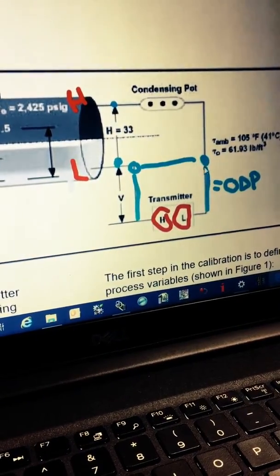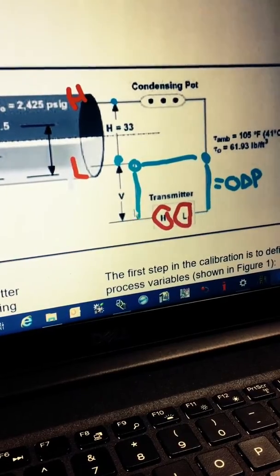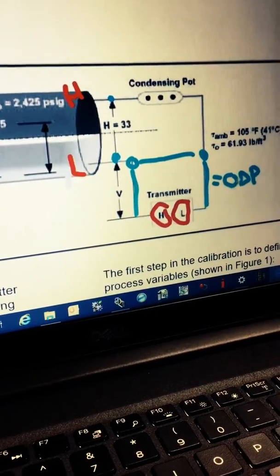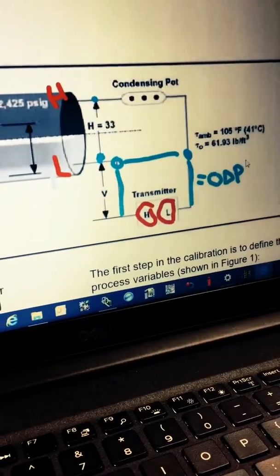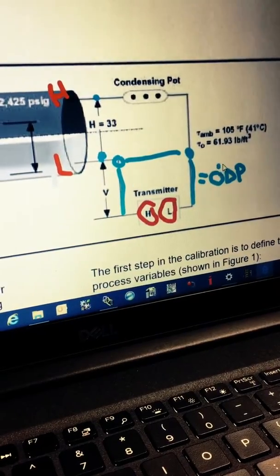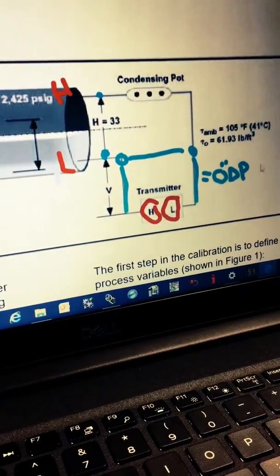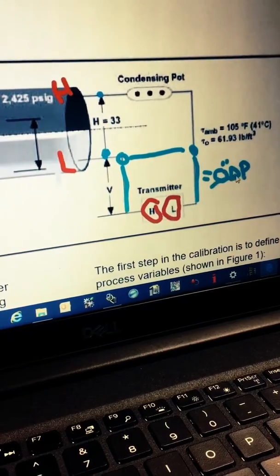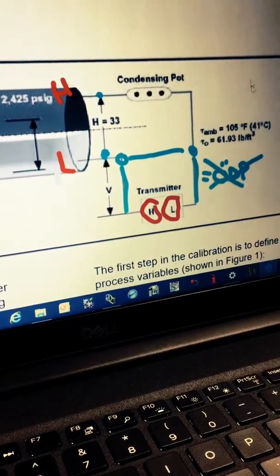So we're basically going to just say that that's zero differential from those points down to the transmitter. And what we're really going to look at is the difference from the low tap of the drum to the high tap of the drum. So we got a zero DP between that lowest point down to the transmitter.